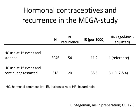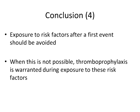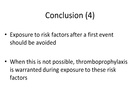Here are data from the MEGA study. Bernadine Stegelman together with Jasmein Timp looked at premenopausal women. In about 3,000 premenopausal women who stopped their hormonal use at the time of their first event, their recurrence risk was low — just 11 per 1,000 per year. However, there was a considerable group of about 500 women who continued or restarted hormonal contraceptive use. In this group, the risk was threefold increased. These events could clearly have been prevented. The fourth conclusion: exposure to risk factors after a first event should be avoided, and when this is not possible, thromboprophylaxis is warranted during exposure.